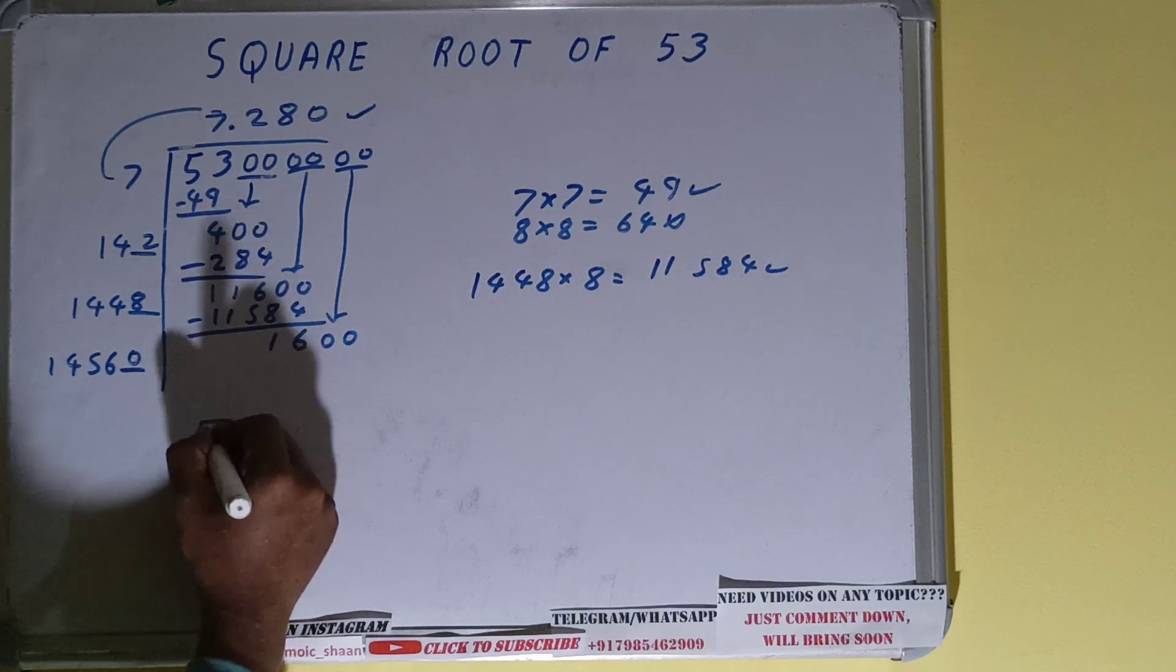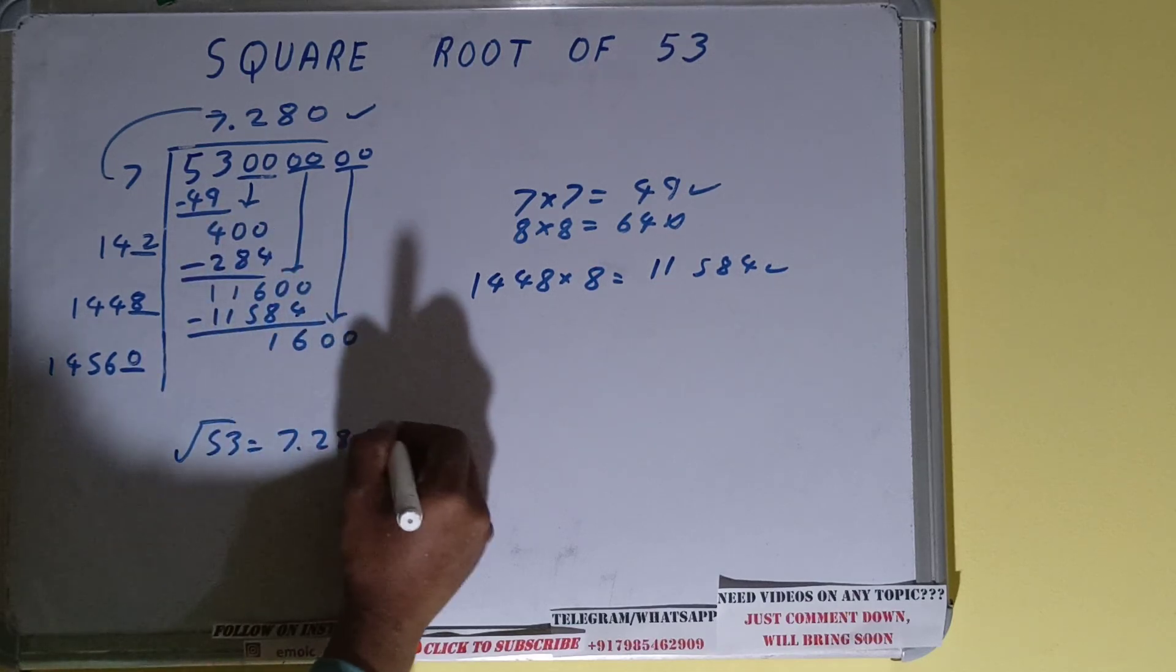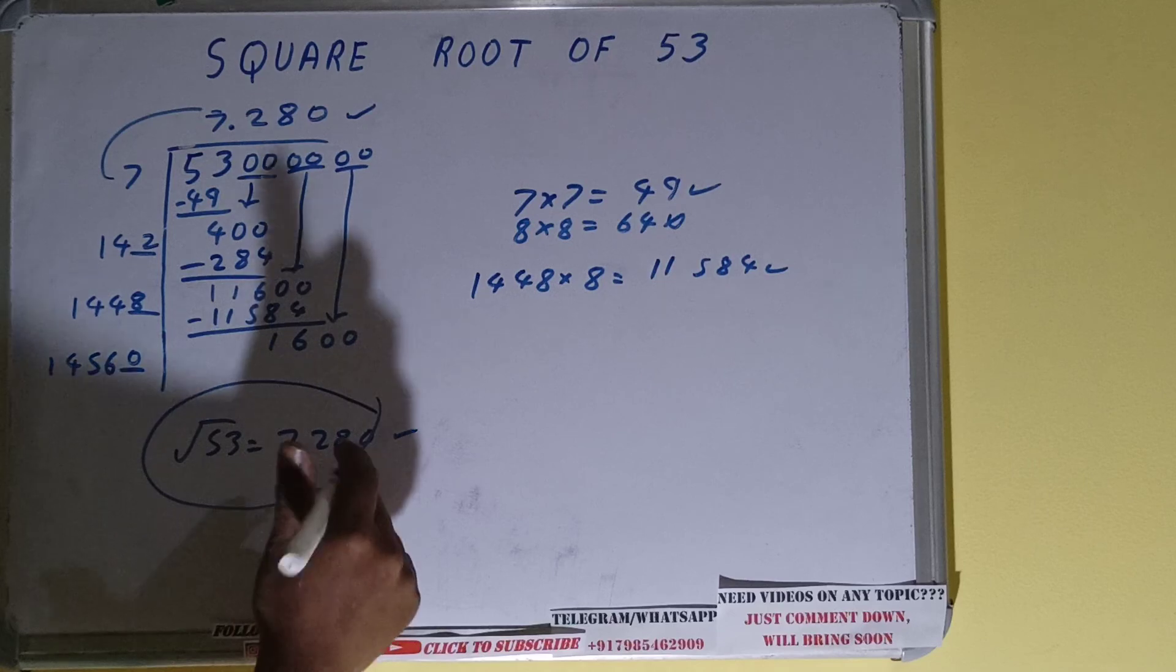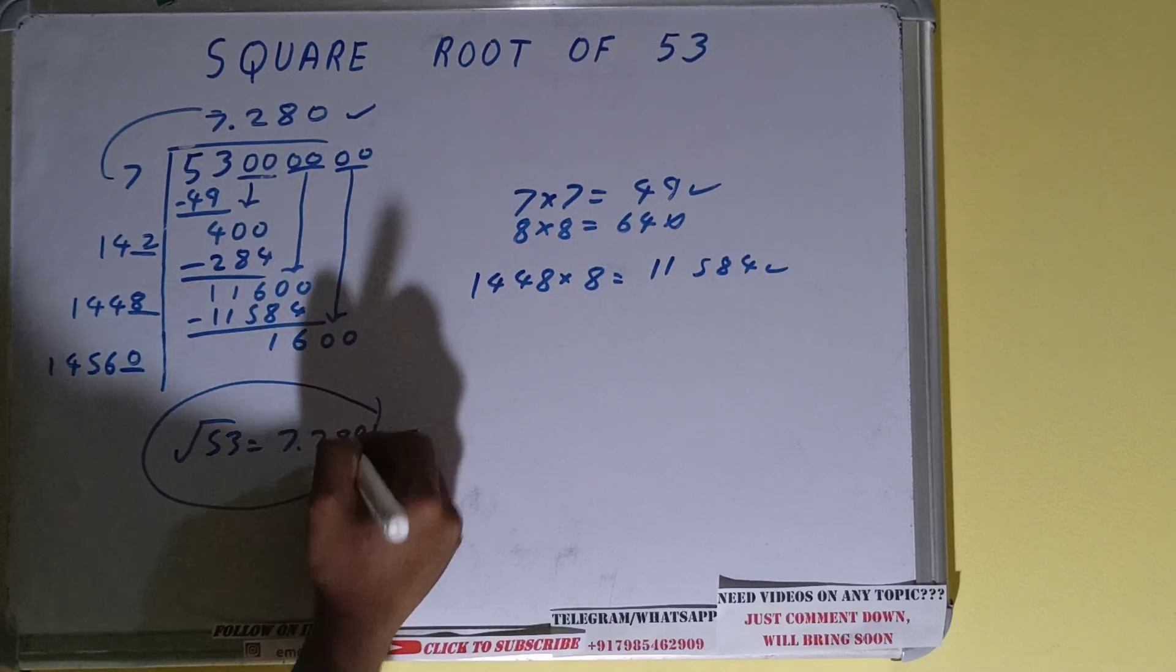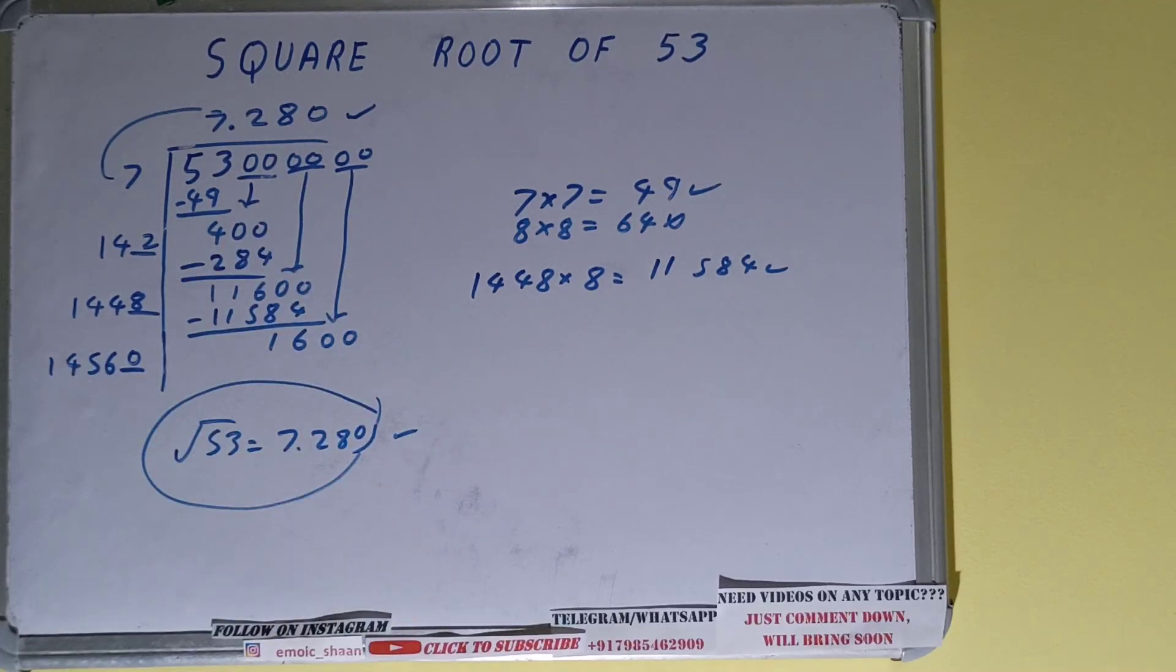And square root of 53 is equal to 7.280. That's it, this is all. Okay, so if you found the video helpful, please click the like button, do consider subscribing, and thanks for watching.